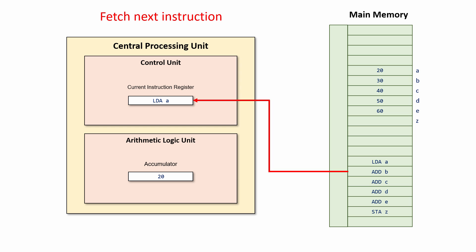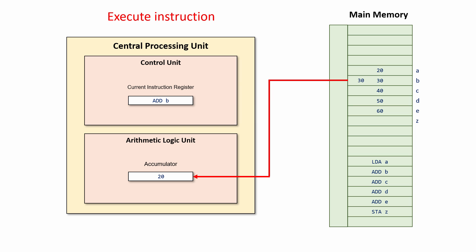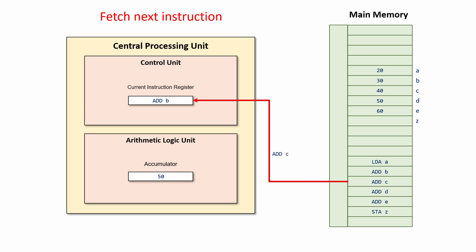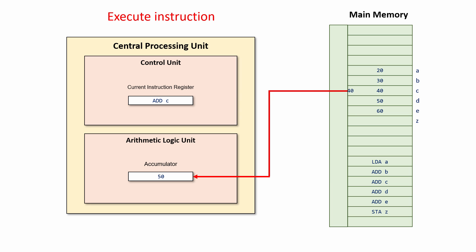The next instruction is then fetched — it's copied from the memory into the current instruction register, overwriting the instruction that's already there. Add B tells the CPU to add the contents of variable B to whatever's already in the accumulator. So the value 30 is copied from the memory and added to the contents of the accumulator by the electronic circuits inside the arithmetic and logic unit.